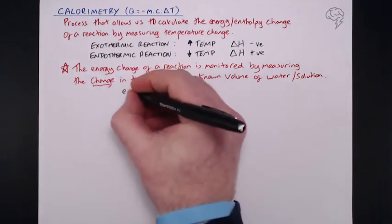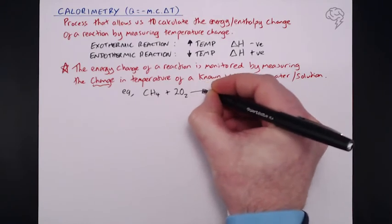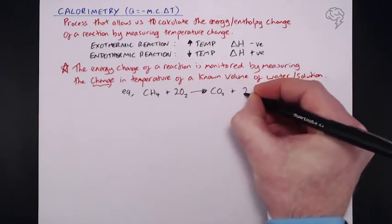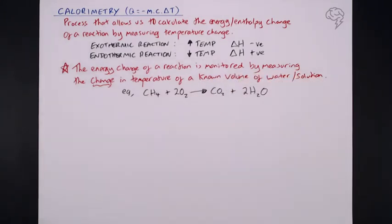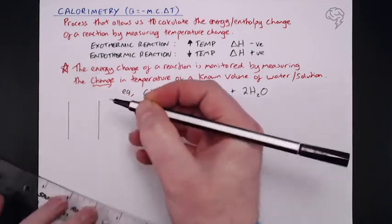So we're going to take an example now. Let's just say, quite simply, burning methane. So we've got CH4 plus 2O2 gives CO2 and 2H2O. Basically, this is what's going to happen. We're going to set up a very simple practical whereby we're using methane, which is basically what's coming out of the Bunsen burner, and we're going to use that to heat a known volume of water.